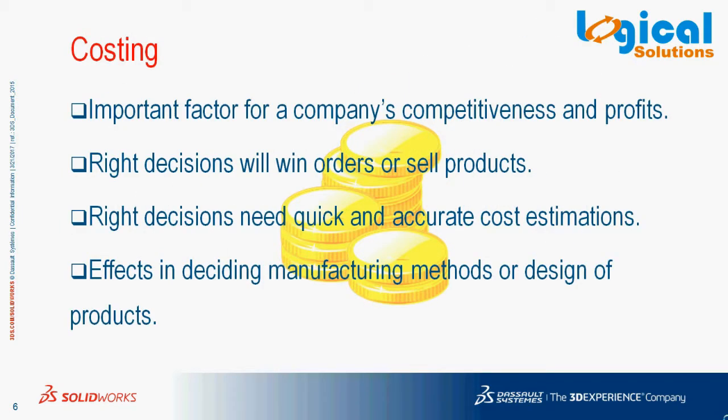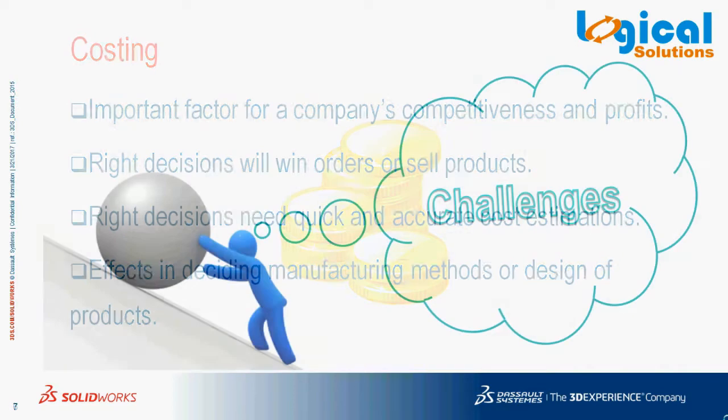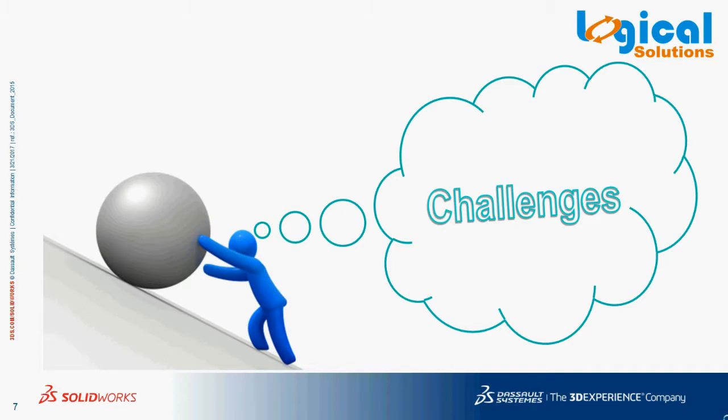Why is costing required? Estimating the cost of manufacturing is important for any company's competitiveness and for earning profits. To sell or to get orders, decisions have to be taken in the right manner, which requires accurate and quick cost estimation of products. Also, estimating the cost of a product involves deciding the manufacturing process to be done, which in turn saves money and time.